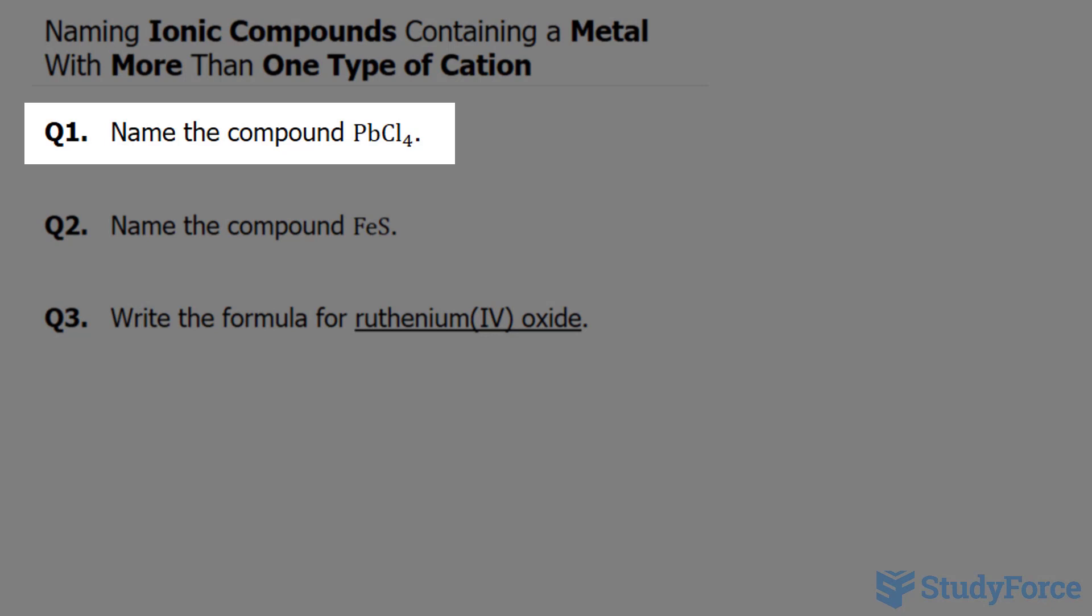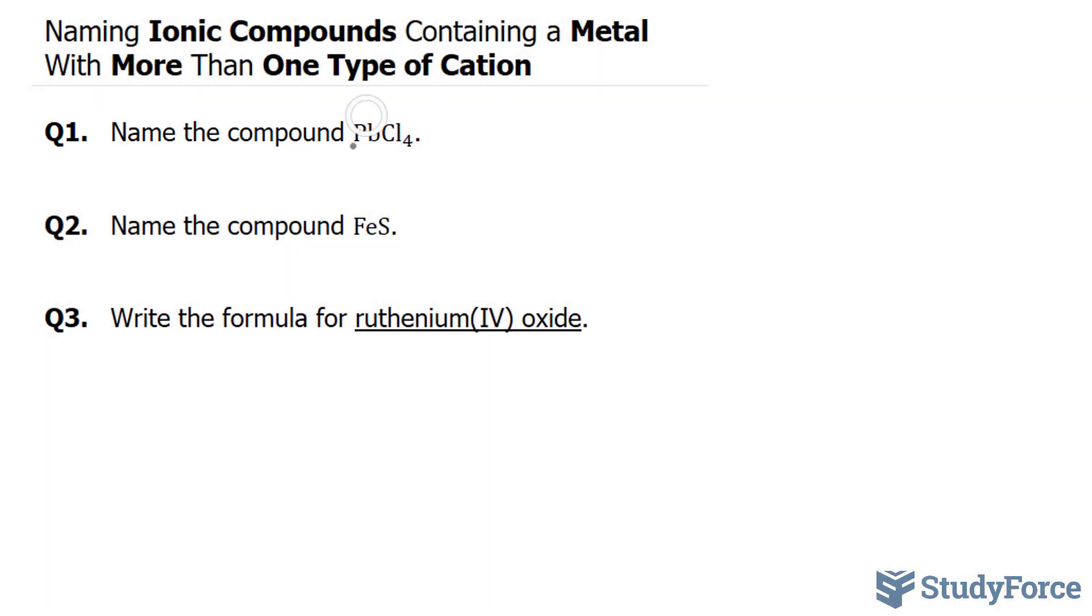Name the compound PbCl4. Pb is the symbol for lead, and Cl is the symbol for chlorine. This is our cation because it's the metal. This is our anion because it's the nonmetal.